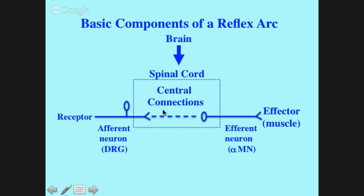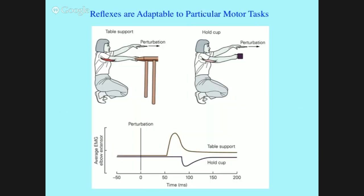One thing I said about reflexes is that they're a relatively stereotyped response, but I want to qualify that — it's really important to do so. Reflexes are not absolutely stereotyped; they're very much adaptable to a particular context. This next slide helps make that point, although the example is not exactly a reflex. The same kind of concept applies to reflexes, and I'll show a specific example later after discussing specific circuits.